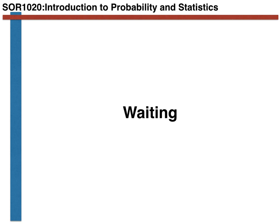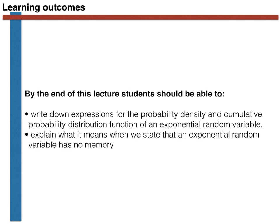In this video we are going to introduce a random variable that can be used to model the random amount of time that we have to wait before an event occurs. The type of random variable we are introducing is known as an exponential random variable, and by the end of the video you should be able to write out the probability density and cumulative probability distribution functions for this type of random variable.